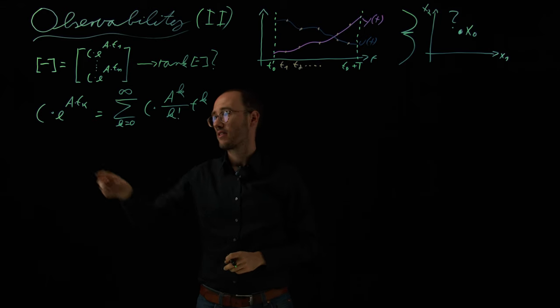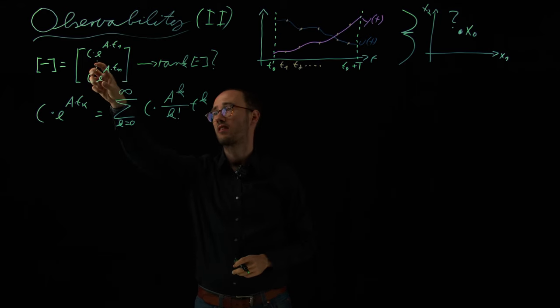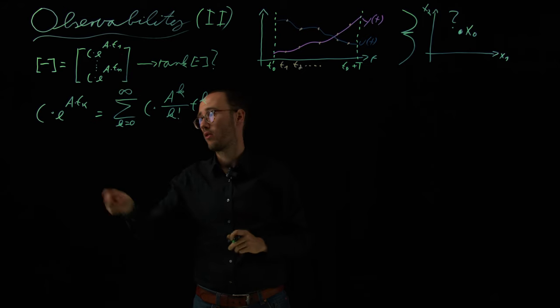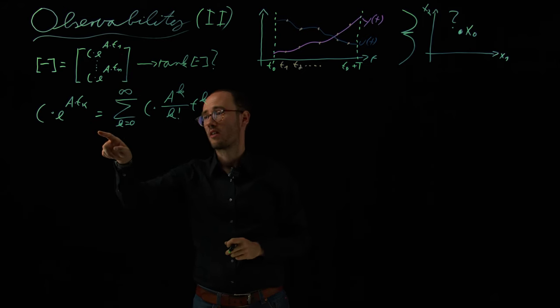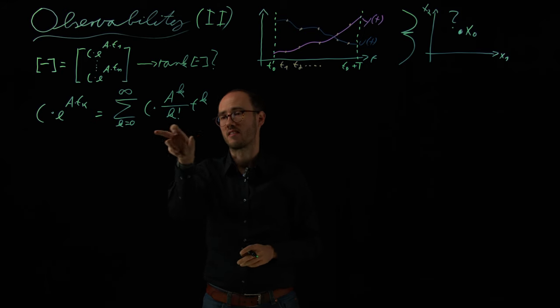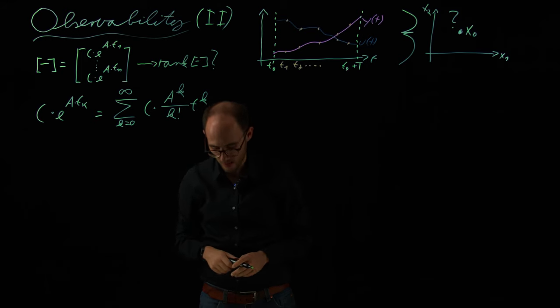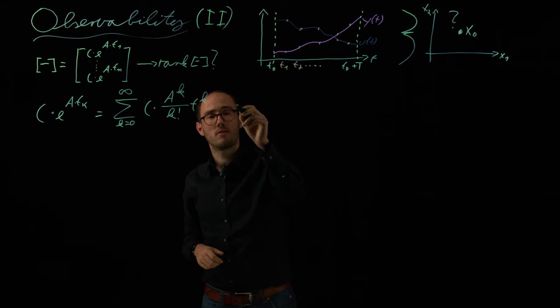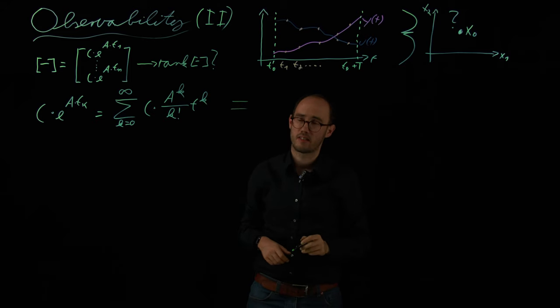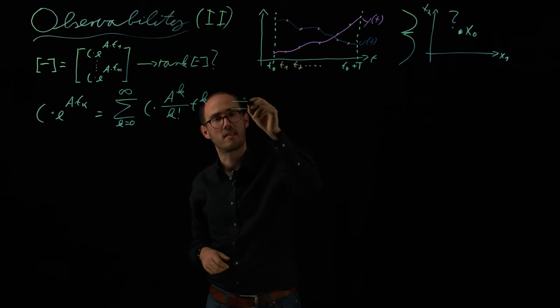For that we have seen that this matrix is decomposition of C times e to the power of A times some measurement time point. Using the matrix exponential equation we can write this in this series expression. Now what we are going to utilize is, and I will not apply here any formal proof, I will just apply the theorem